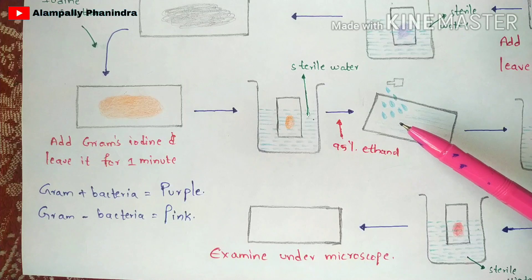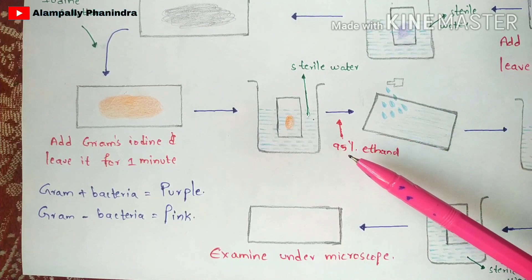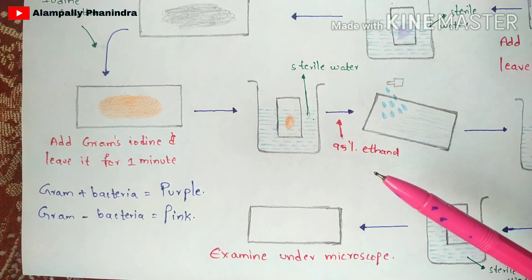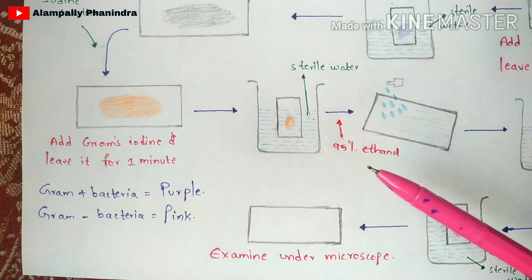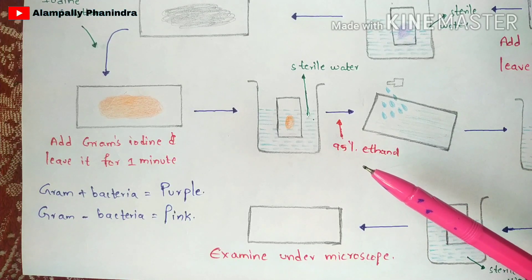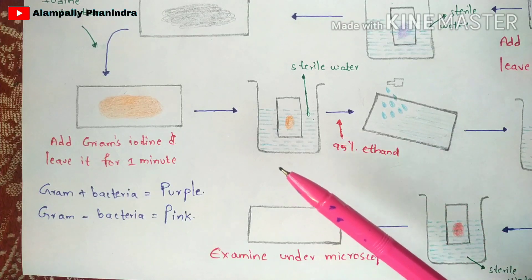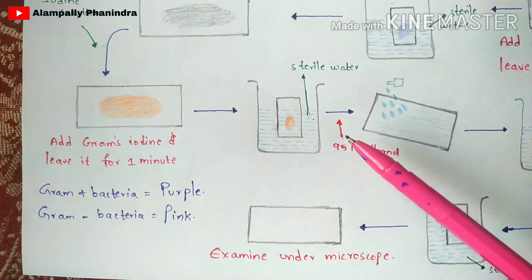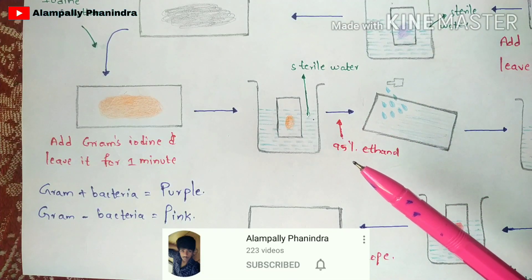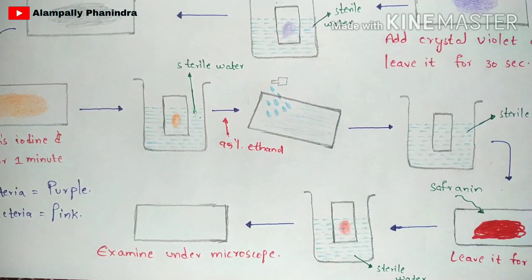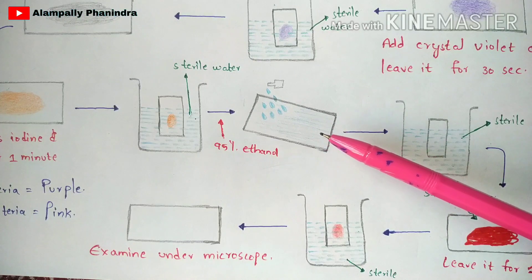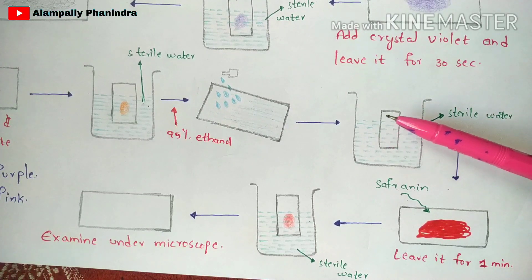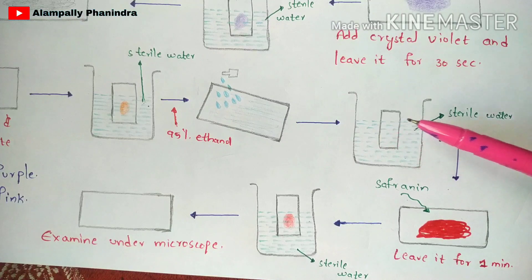After removing the slide, place it at 25 degrees and add 95% ethanol, which is the decolorizing agent. Decolorizers help remove any remaining color from the slide. We have added crystal violet and gram's iodine, so any residual color will be removed by the 95% ethanol. You can also use alcohol as a decolorizer. After adding the decolorizer, take a water bath with sterile water again and wash the slide, then remove it.